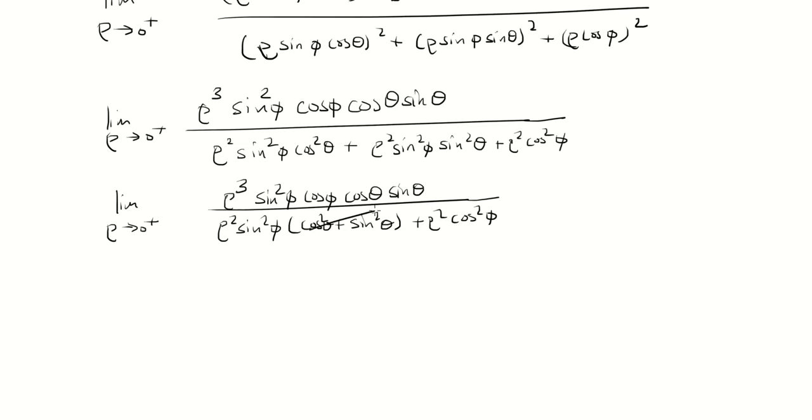The top we're just going to copy. What's in the parentheses is just one. But notice that I can factor out rho squared from the denominator, that's rho squared times sine squared phi plus cosine squared phi. And the top is rho cubed sine squared phi cosine phi cosine theta sine theta.